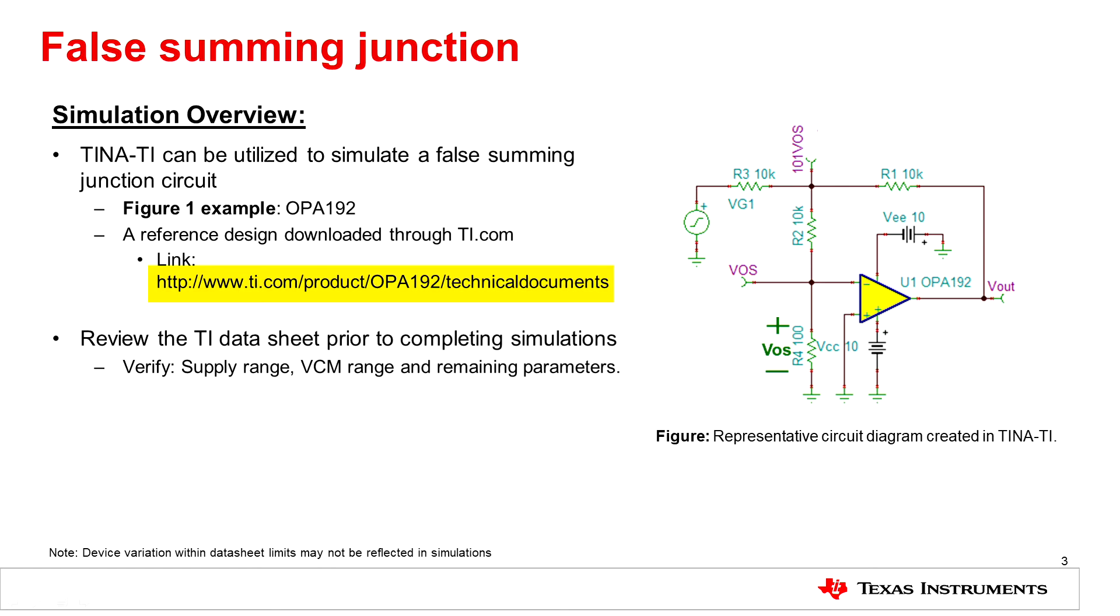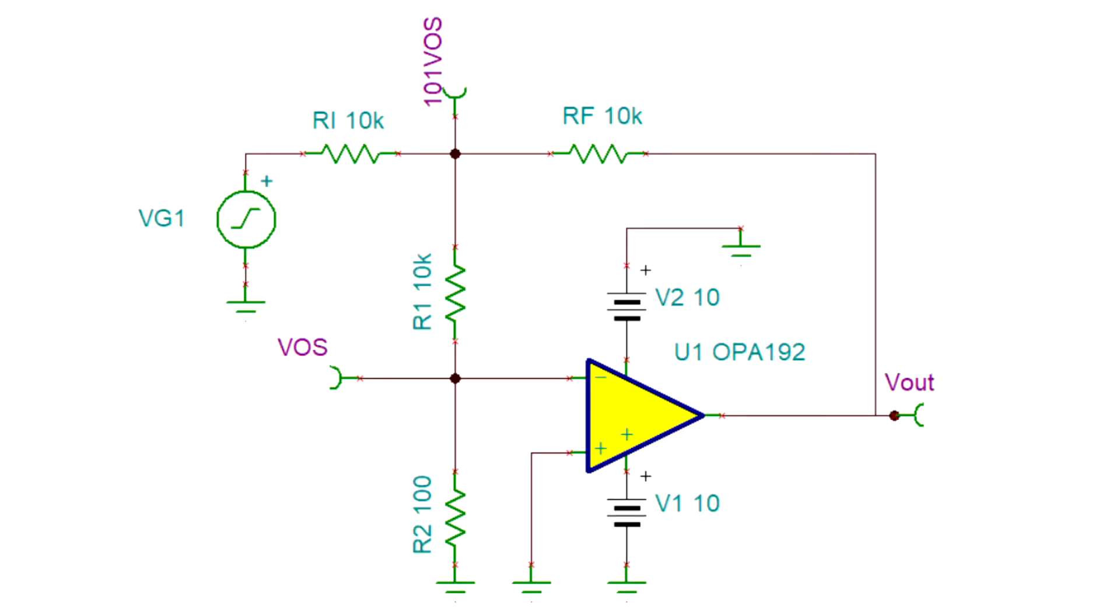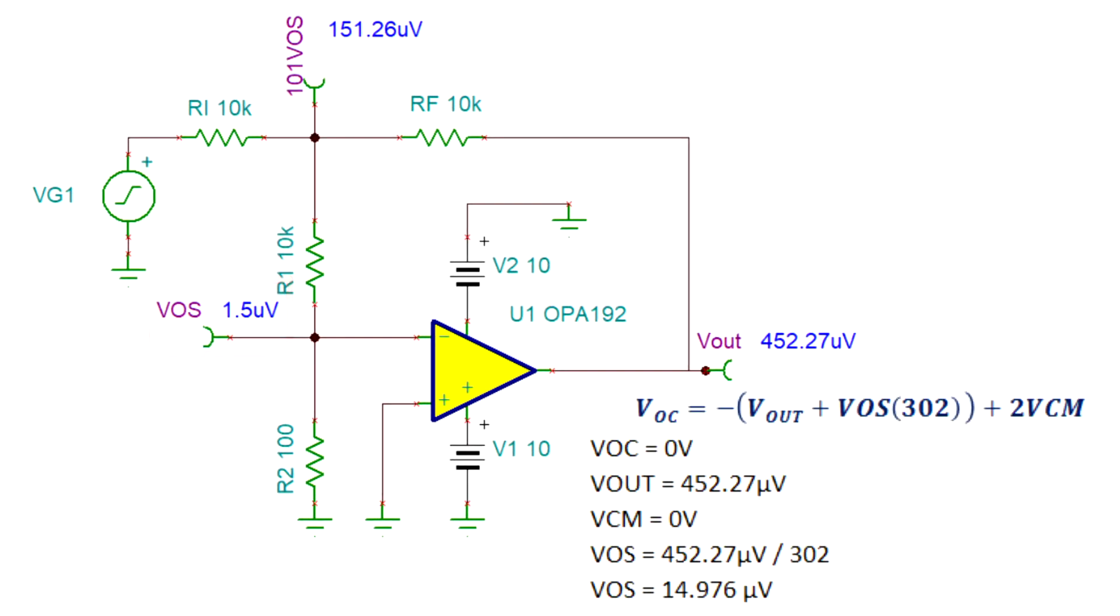Utilizing the free TINA TI software downloaded from TI.com, we see that the offset of the amplifier is approximately equal to 1.5 microvolts. Please note that the offset voltage shown may not reflect the minimum or maximum offset defined by the TI datasheet.